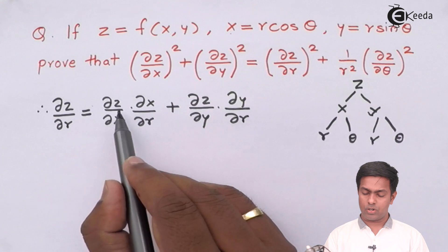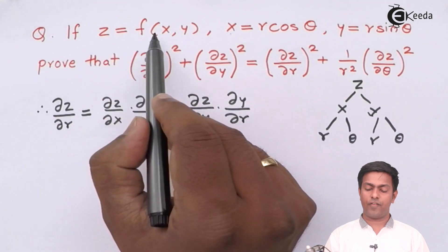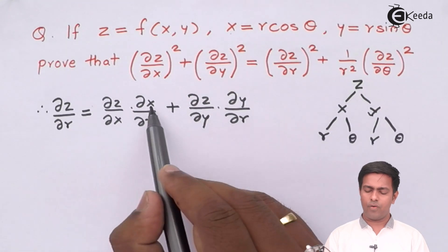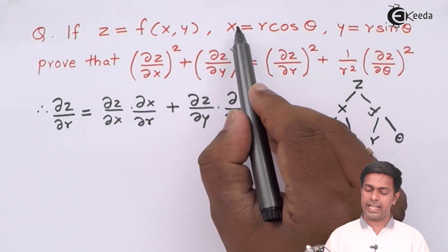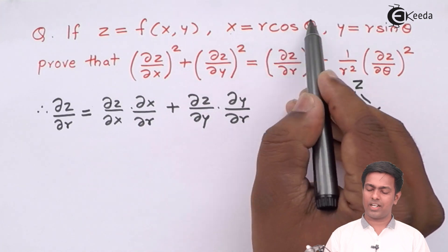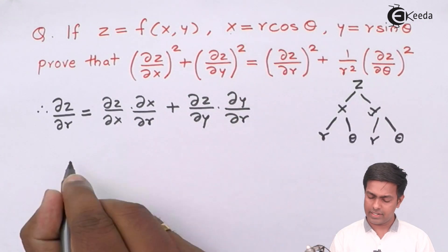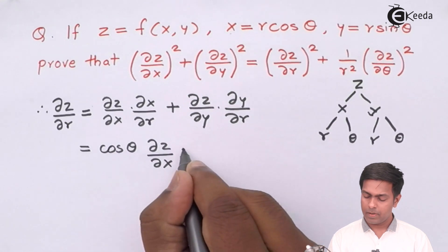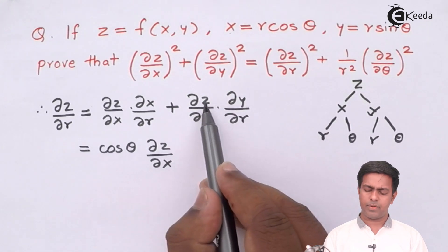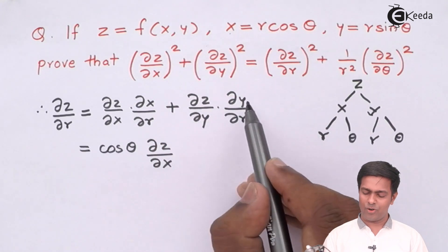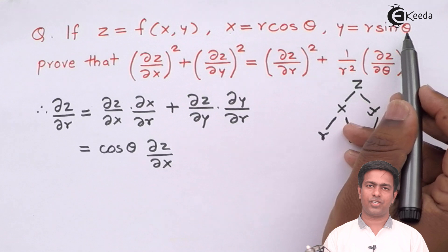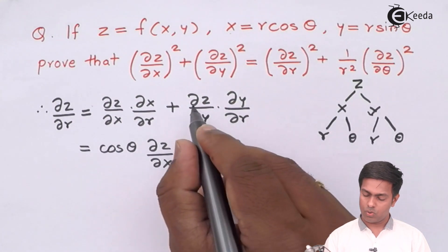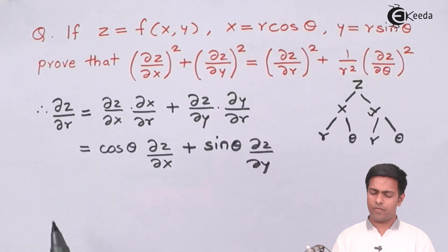Now let's find the values. Del Z by del X cannot be found because Z is not explicitly defined. For del X by del R: differentiating X with respect to R partially, cos theta remains constant and the derivative of R is 1, so we get cos theta. The del Z by del X term remains as is. For del Y by del R: differentiating Y with respect to R partially, sin theta is constant, giving sin theta. The del Z by del Y term also remains as is. So this is the value of del Z by del R.